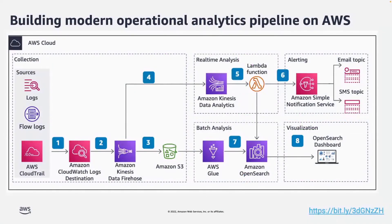Let us look at how to build a modern operational analytics pipeline on AWS. This is one of the reference architectures where you can collect logs — it could be Flow Logs, CloudWatch Logs, or AWS CloudTrail Logs. Then you can use Amazon CloudWatch Logs subscription, and Amazon Firehose can collect those logs and deliver to S3. From S3, you can have AWS Glue which can deliver the data into Amazon OpenSearch. From Amazon OpenSearch, you can build the OpenSearch dashboard. Also from Glue, when data is streaming in, you can use Amazon Kinesis Data Analytics — a managed service for Apache Flink — to analyze and process the data, and if something is happening you can do alerting by using Amazon Simple Notification Service. This reference architecture is publicly available at the link mentioned.